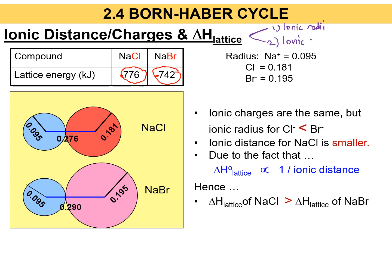Looking at the ionic charges of NaCl and NaBr: Na is +1, Cl is -1, Br is -1 — all ionic charges are equal to 1. So ionic charge is not the deciding factor here; it cancels out in this comparison. The only factor we can consider is ionic radius. We can see that the ionic radius of Cl⁻ is smaller than that of Br⁻.